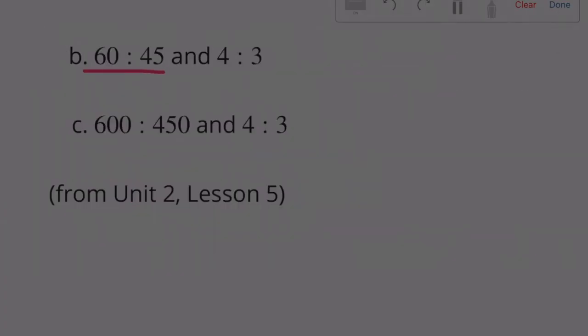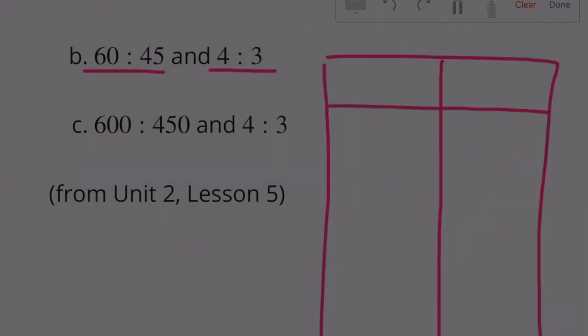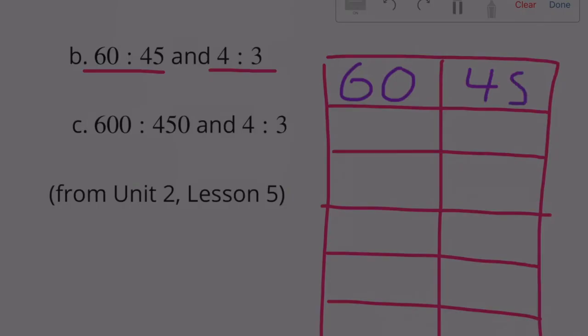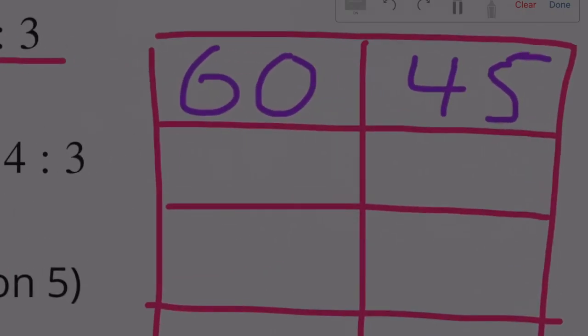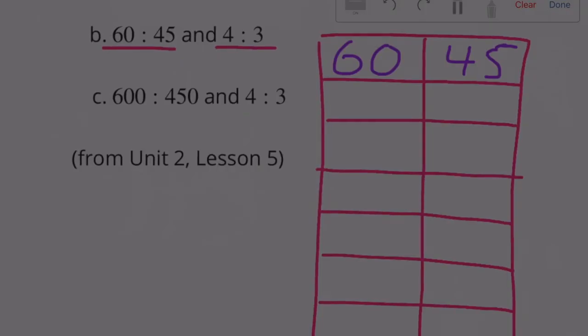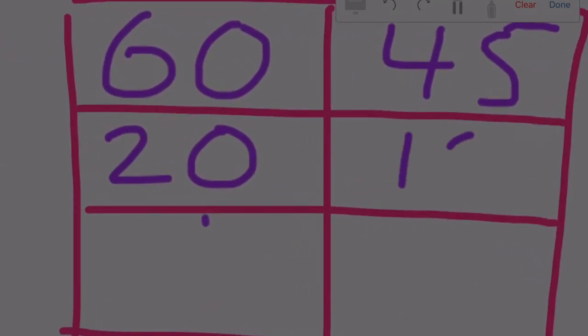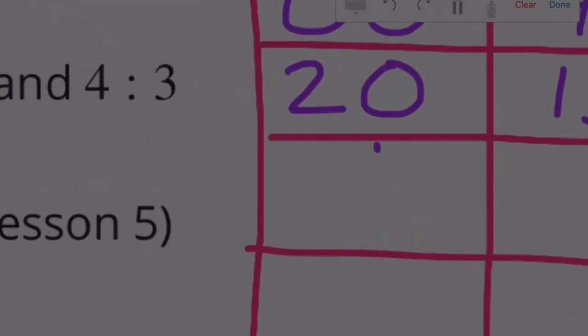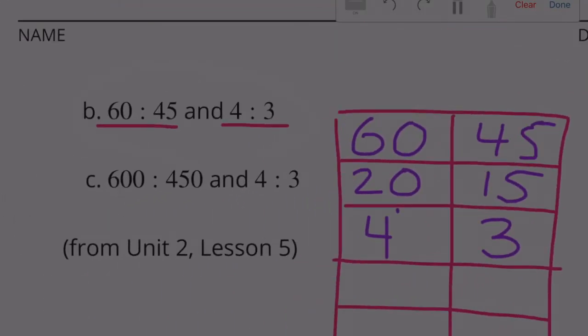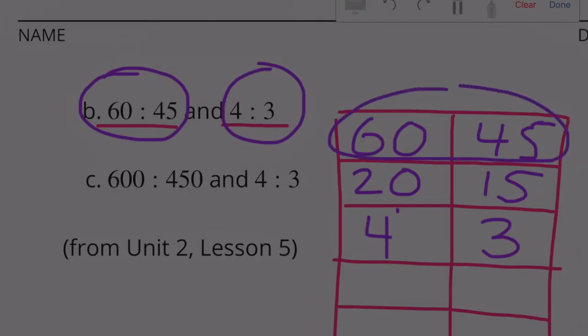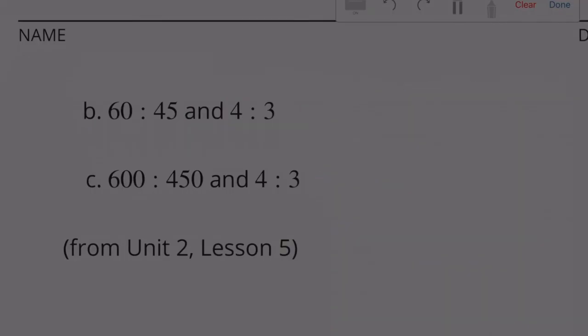B: 60 to 45 and 4 to 3. 60 and 45 are both divisible by 3. 60 divided by 3 is 20, and 45 divided by 3 is 15. And even these are divisible by 5. 20 divided by 5 is 4, and 15 divided by 5 is 3. So we have just proved that 60 to 45 is an equivalent ratio as 4 to 3. 60 to 45, 20 to 15, 4 to 3, these are all equivalent ratios.